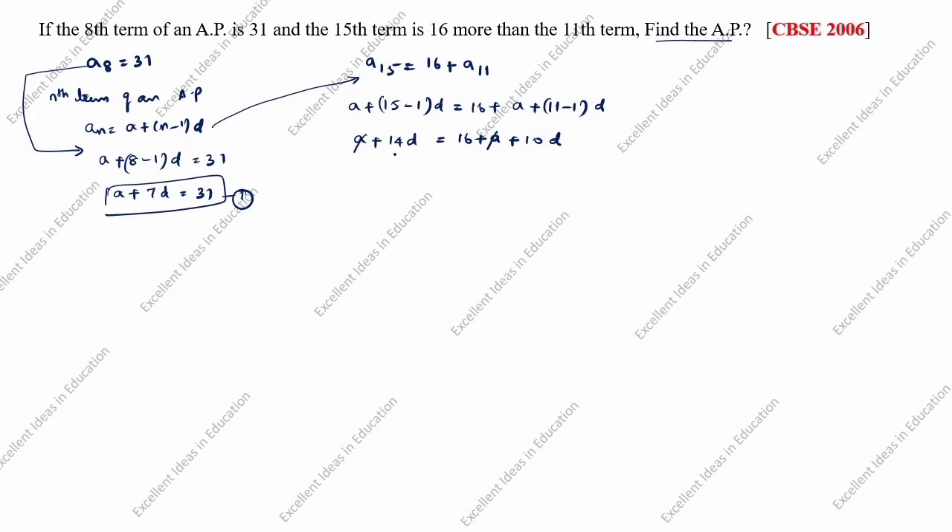This A and this A cancel. 14D, bring the plus 10D to this side, minus 10D equals 16. 14D minus 10D equals 16. 4D equals 16 divided by 4. D equals 4.